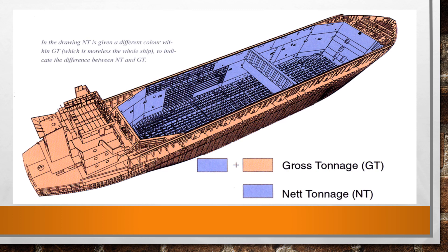The gross tonnage volume is multiplied by a coefficient which results in a non-dimensional number. This means no values of tonnage or metric cube should be placed after the number. All measurements used in the calculation are moulded dimensions.